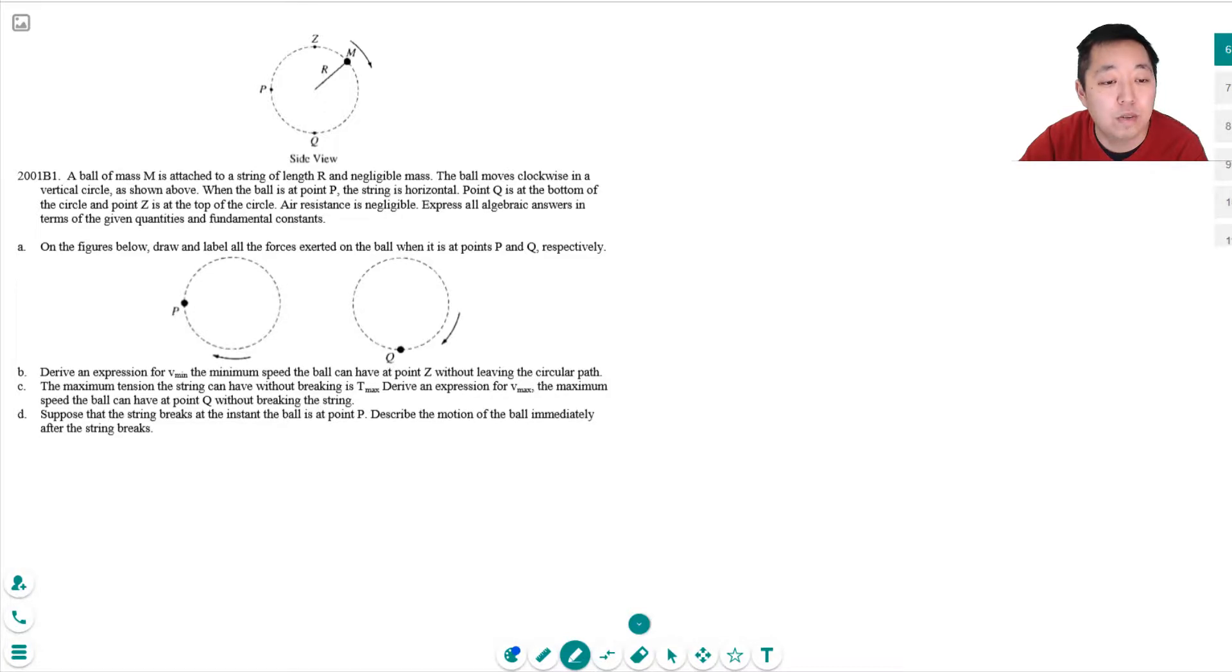On the figures below, draw and label all forces exerted on the ball when at points P and Q. So it's going in a vertical circle so here it's feeling gravity. Here it's feeling the tension from the string. Here it's feeling gravity down here and here it's also feeling another tension in the string.